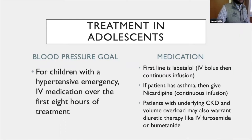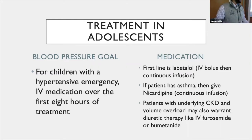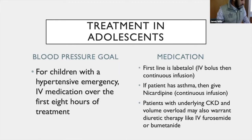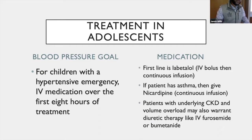For a child with hypertensive emergency, the blood pressure goal uses IV medication over the first eight hours of treatment. Lowering blood pressure too rapidly — more than 25% — can lead to irreversible target organ damage, permanent neurologic symptoms, visual defects, and renal insufficiency.